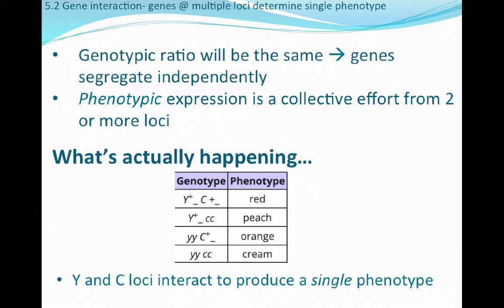Because the genotypic ratio is the same, that tells us those genes are segregating independently during gamete formation. The phenotypic expression is going to be a collective effort from two or more loci — the Y locus and the C locus — which is why we get the different phenotypes and how they relate back to the different genotypes. The Y and C loci interact with one another to produce a single phenotype; this is multiple loci coming together and interacting to produce that single phenotype.